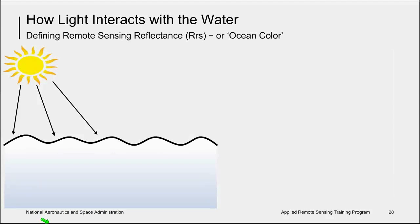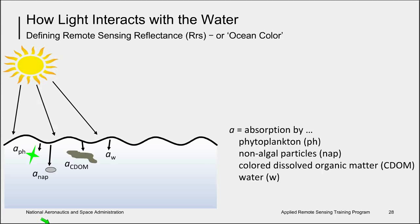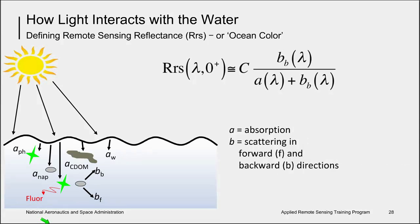So how does light interact with the water? Light from the sun passes through the atmosphere, and if it reaches the sea surface, it may reflect off the surface or pass through it. The fate of a photon is to be either scattered or absorbed. If absorbed, phytoplankton, non-algal particles, colored dissolved organic matter or CDOM, or water itself will absorb the light. If scattered, it will do so in either the forward or backward direction. If in the backward direction, some of it will be re-emitted from the sea surface.